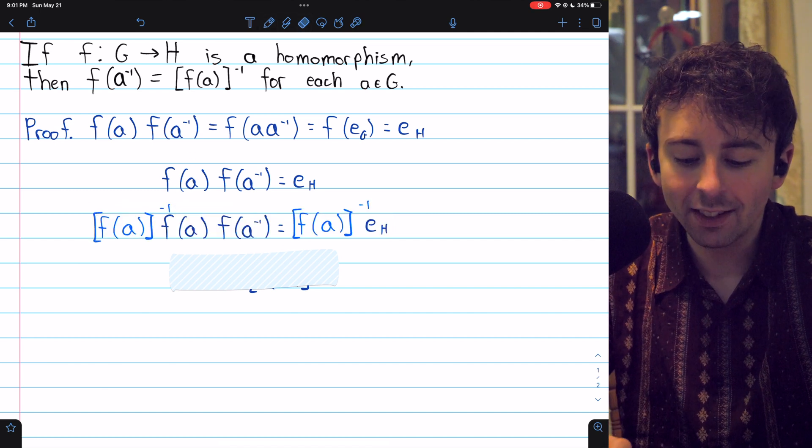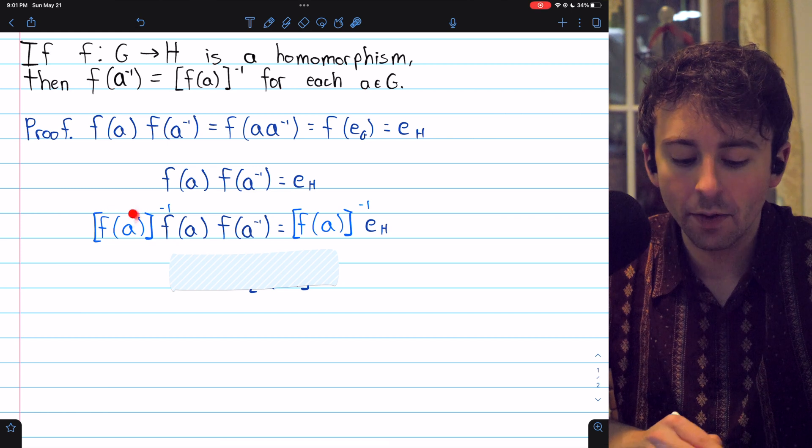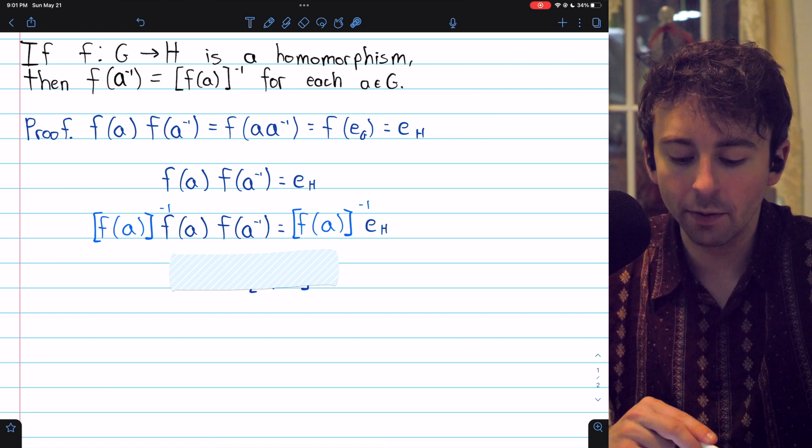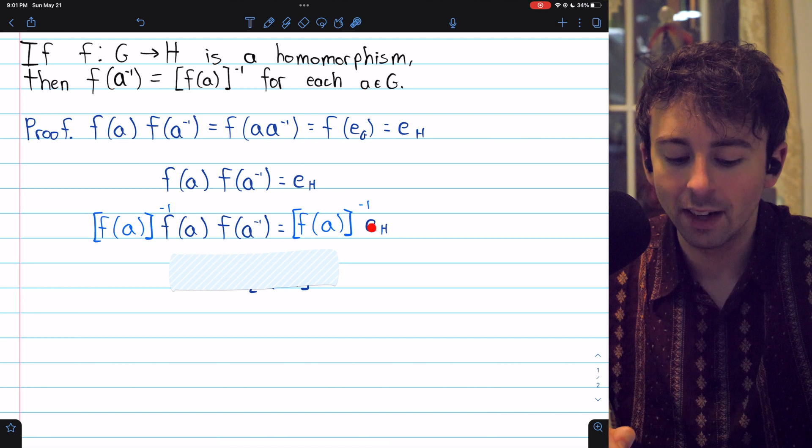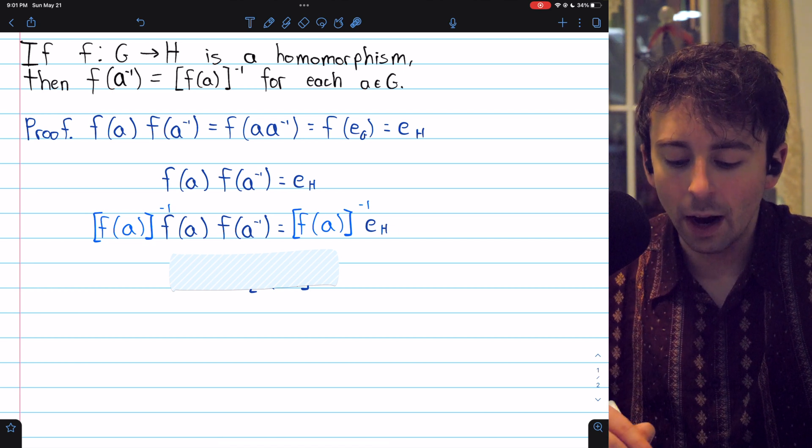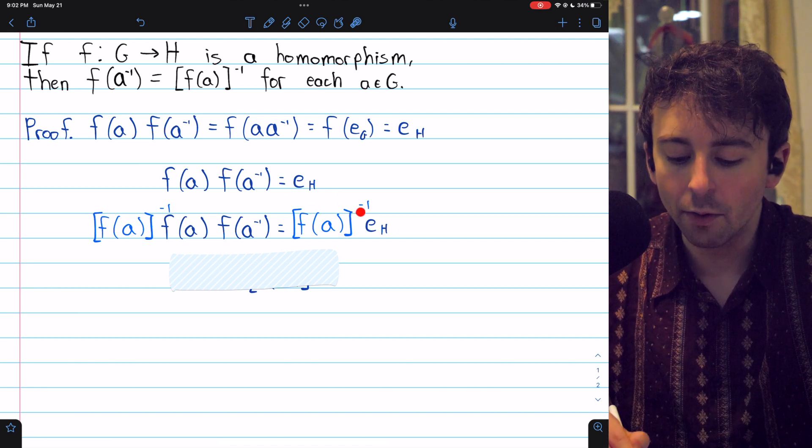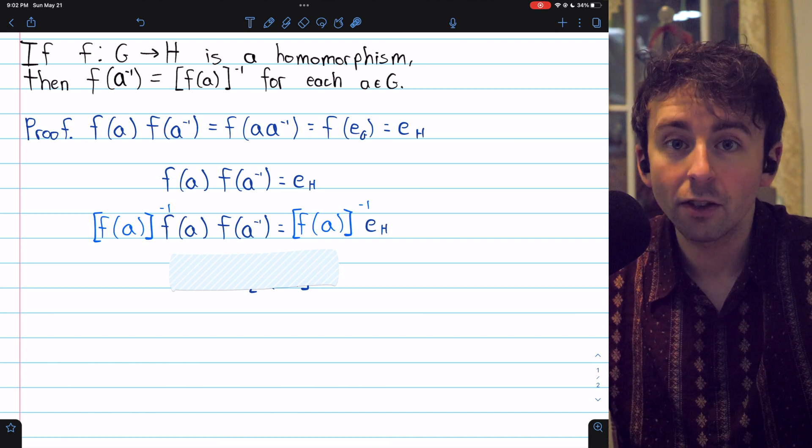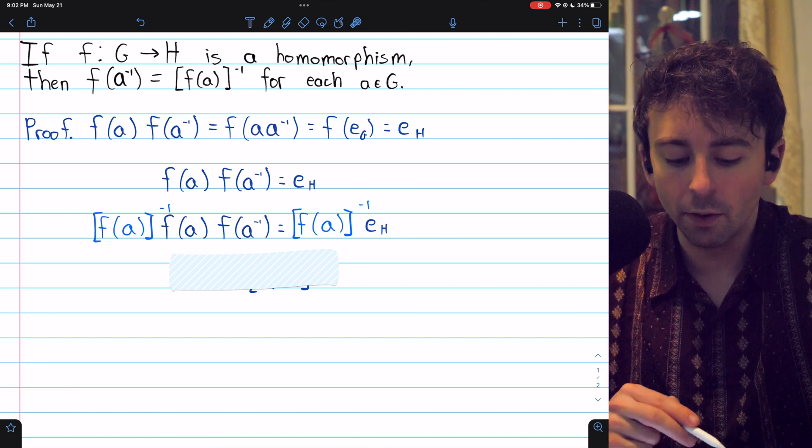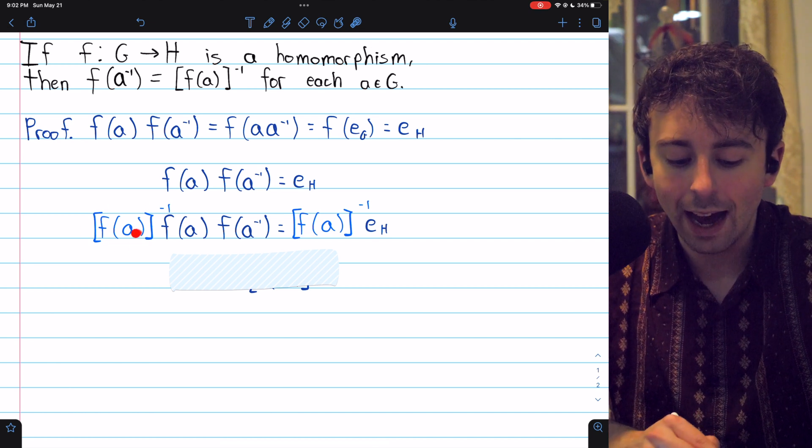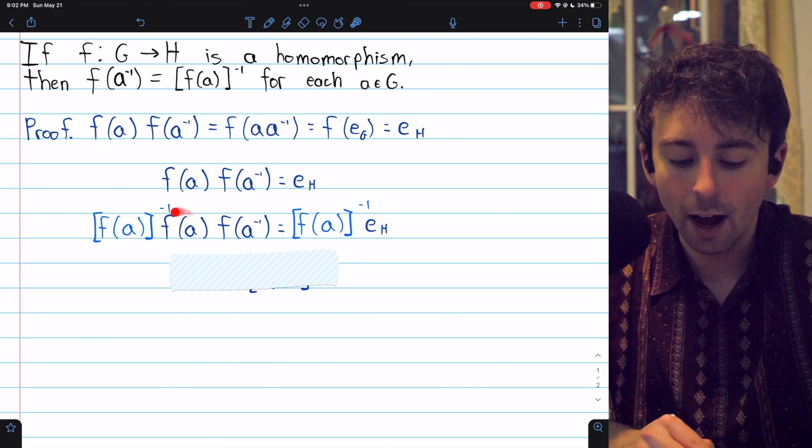And so that brings us here, the inverse of f(a) times f(a), f(a inverse), equals the inverse of f(a) times the identity of H. Now here on the right, f(a inverse) times the identity of H is just f(a inverse). And here on the left, we have the inverse of f(a) times f(a).